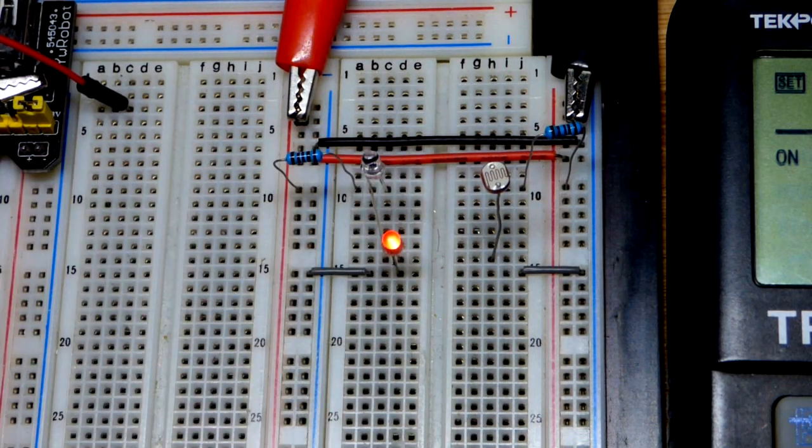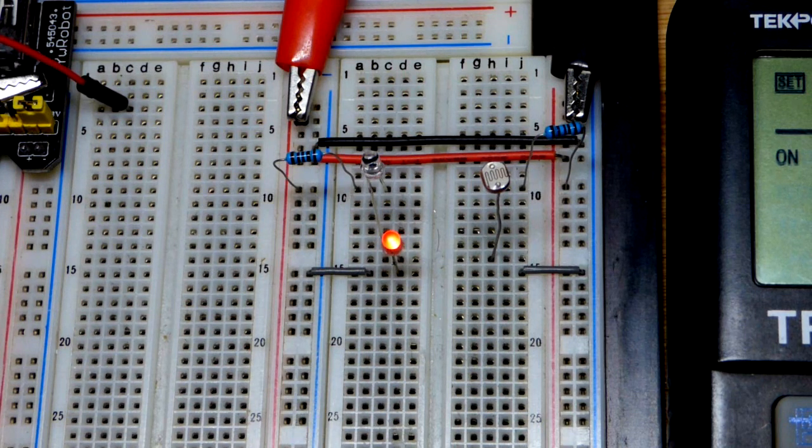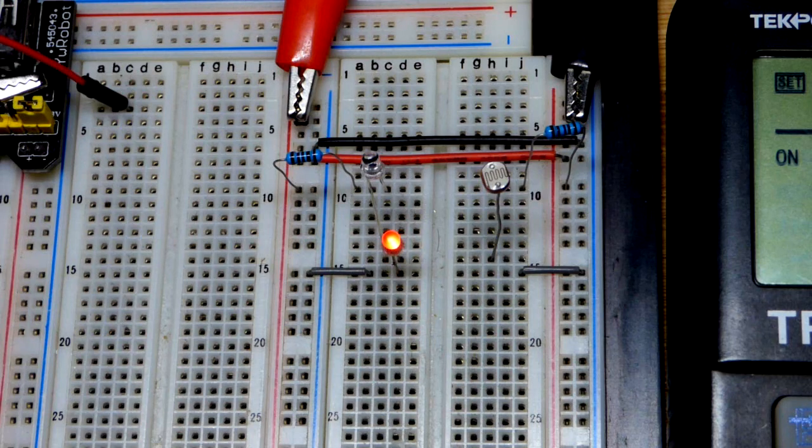Whereas the light dependent resistor is a resistor. Its value changes based on the light on it. So voltage will make a big difference in the current going through it.